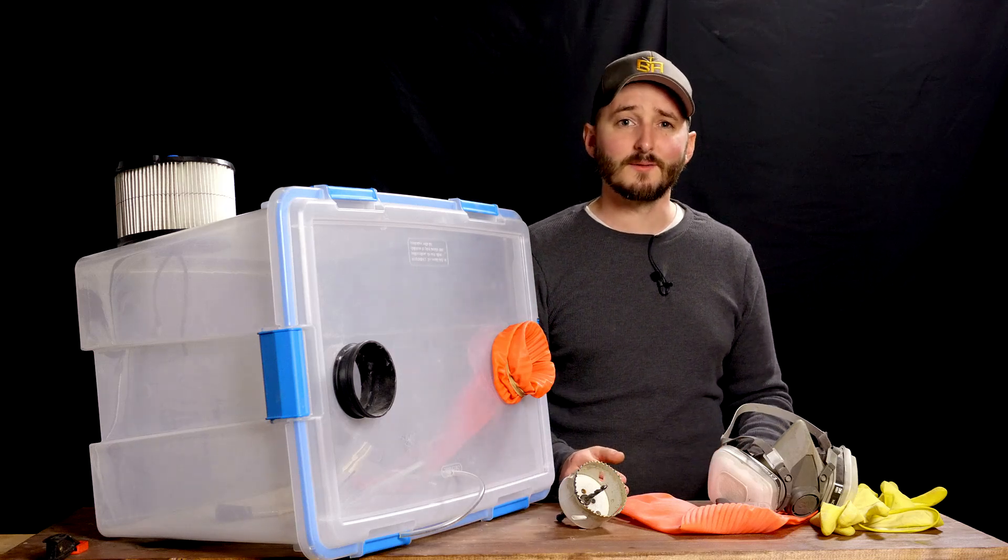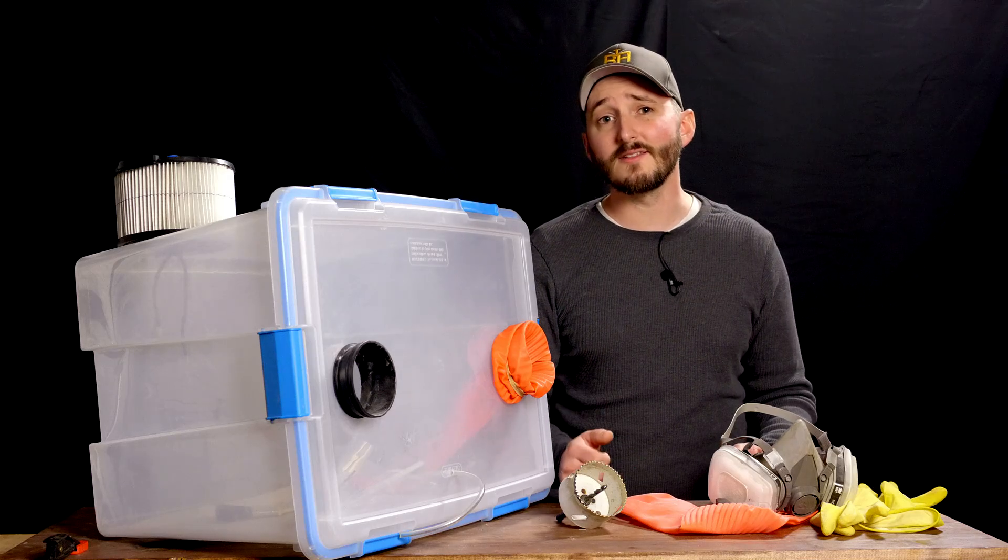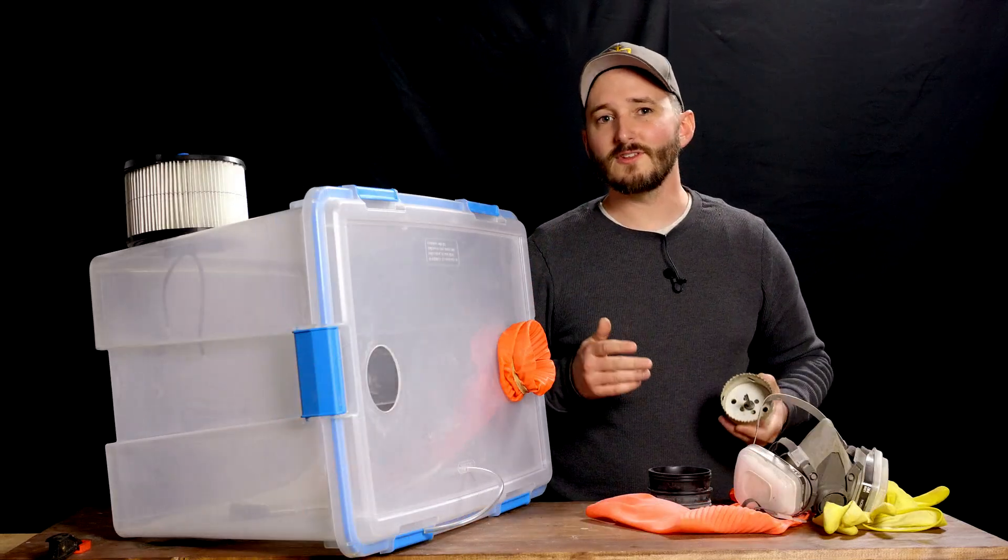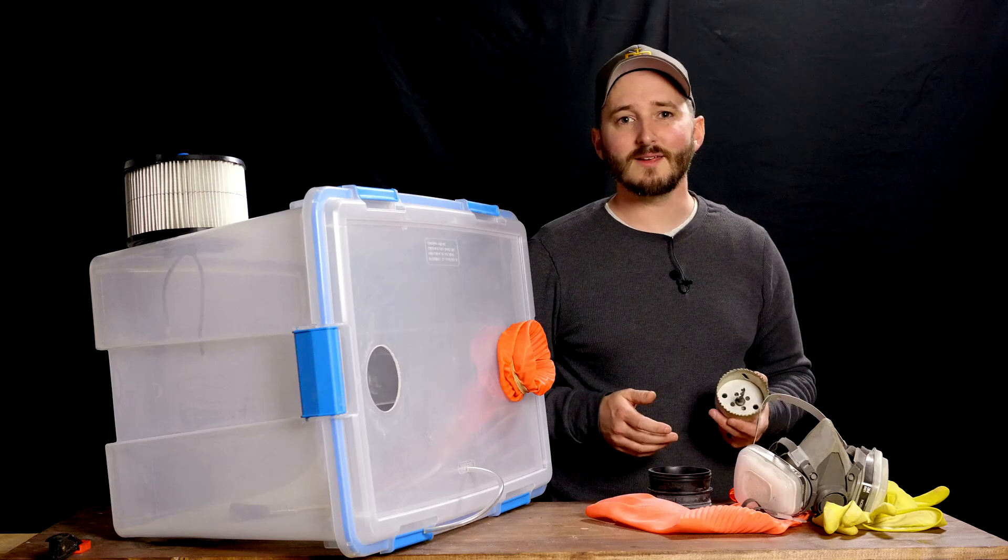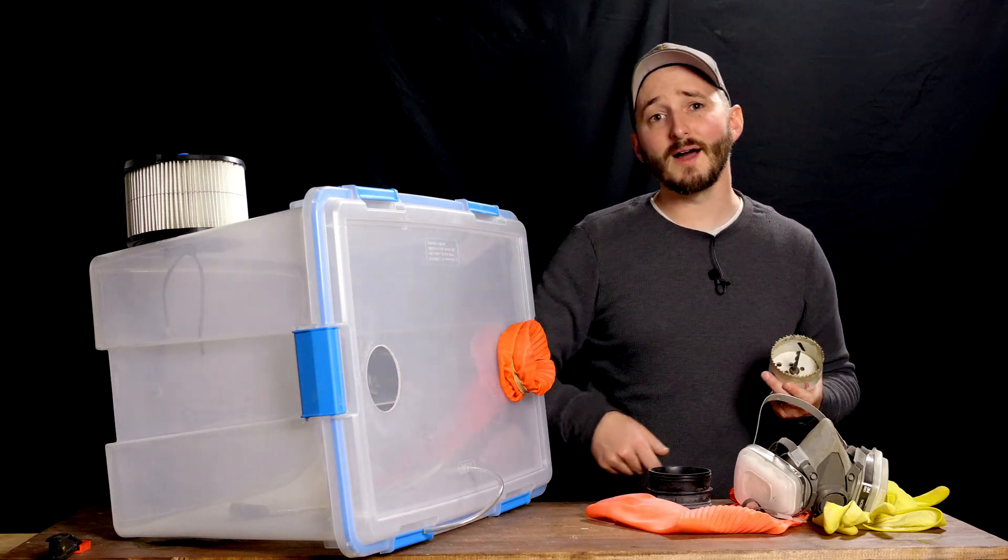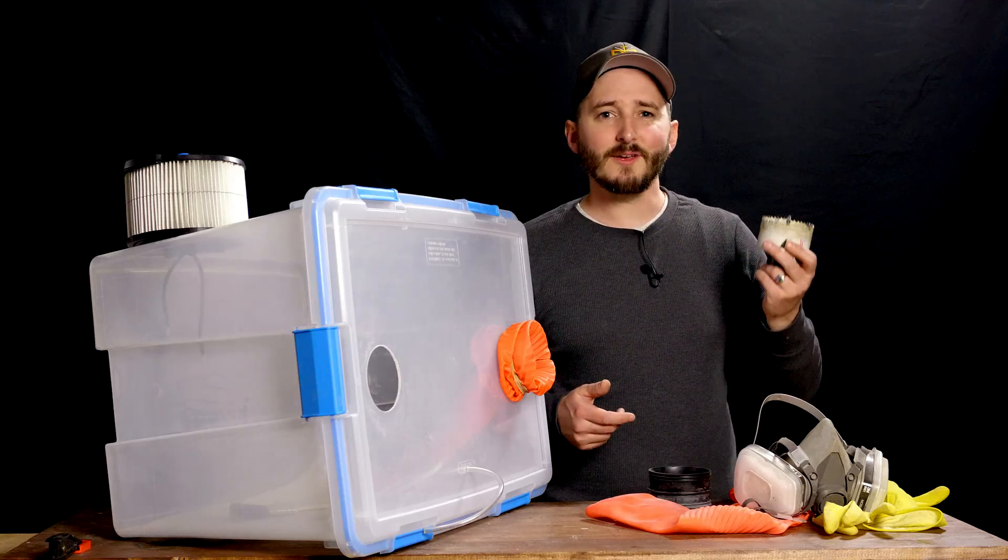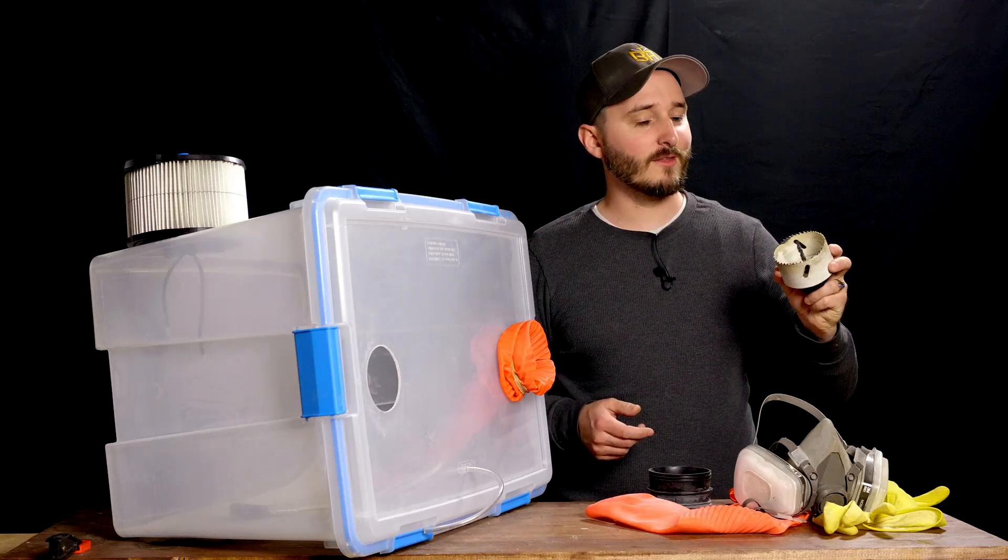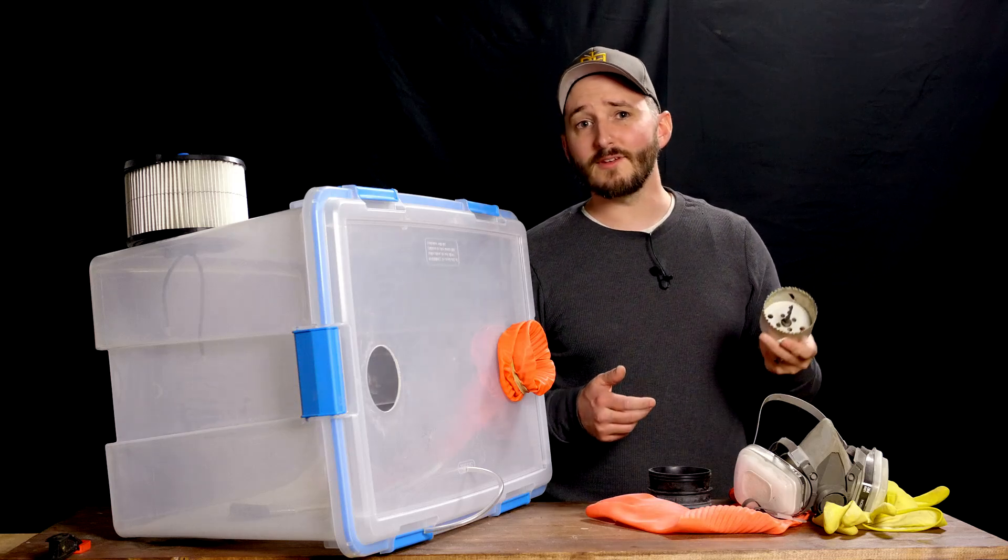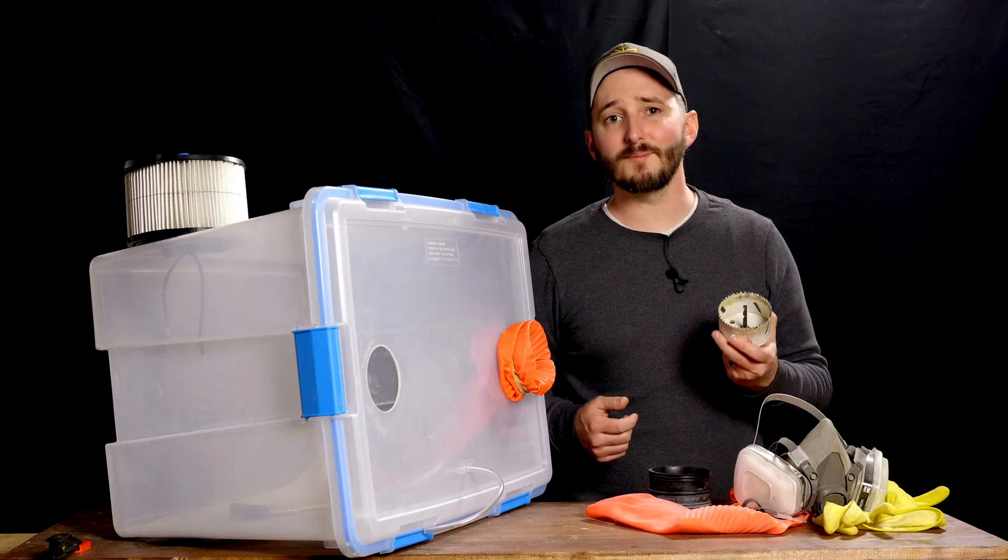You should be able to find a similar watertight storage bin in most supermarkets, at least in the U.S. To turn this bin into a sandblasting cabinet, I drilled two big holes through the lid for my arms, and I used a hole saw to do this. The best way to drill these holes is to run the saw backwards, so that the teeth don't actually do much cutting, but instead melt through the plastic by friction.